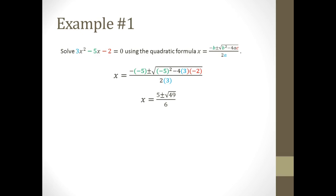Well, lucky for us, 49 is a perfect square. We know that the square root of 49 is 7. So I'm going to use that fact to further simplify my solution.